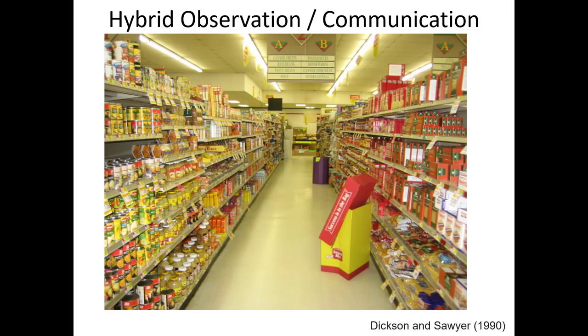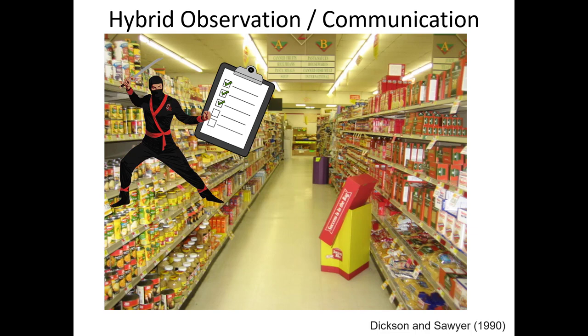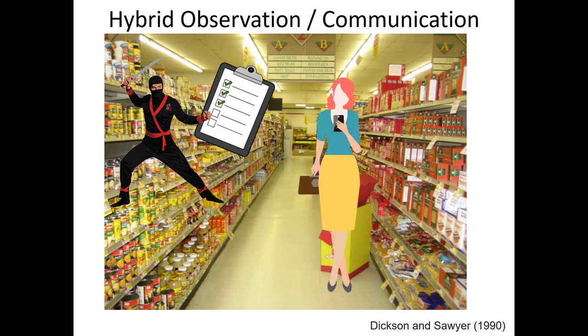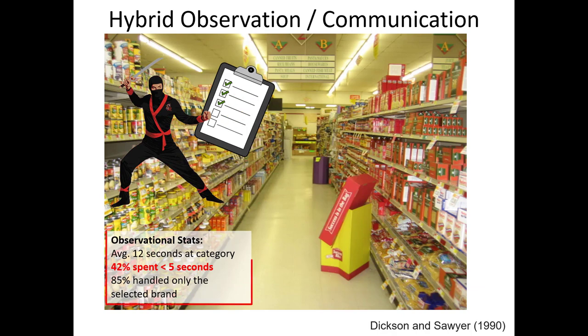Next, I'd like to provide an example of a hybrid observation and communication-based marketing research study from Dixon and Sawyer (1990) in the Journal of Marketing. Marketing researchers were hired to act as secret agents inside a grocery store, pretending to stock shelves. As people approached a particular section of the grocery store, the researchers tracked the number of different products touched, how much time shoppers stood in front of a shelf before making a purchase decision, and ultimately which product they selected. As soon as the person made their selection, the secret marketing researcher introduced themselves, paid them a dollar, and asked a series of survey questions.